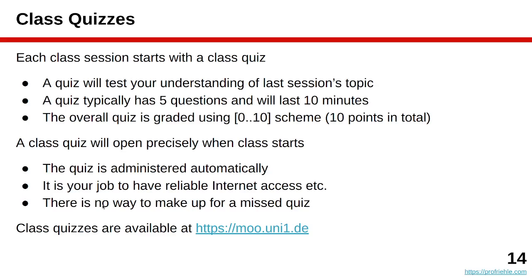Each class session where we had a lecture the week before on agile theory starts the next class with a quiz, where we test your understanding of the last session's topic. It's five questions and the quiz lasts for 10 minutes. It's graded — very simple, not a hard quiz — but it does make sure that you're actually paying attention and attending class. This all happens automatically. You need to be there exactly when class opens because the class quizzes open automatically. There is no way of making up for a missed class quiz. The class quizzes are available by registering for the AMOS course at mu.uni1.de.